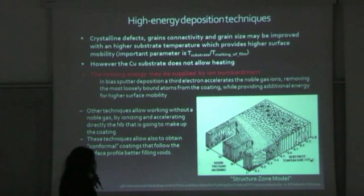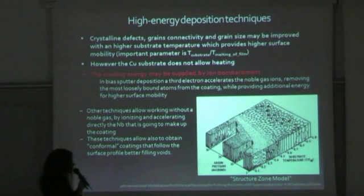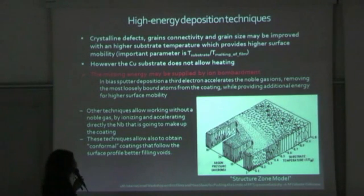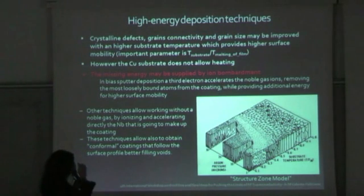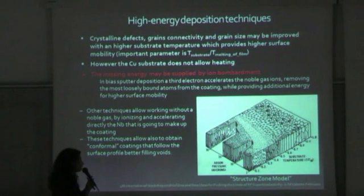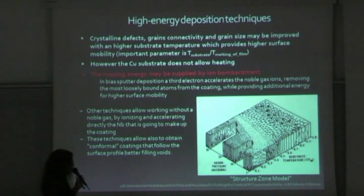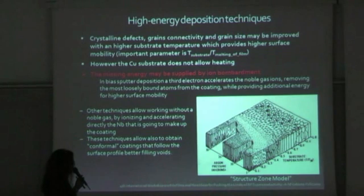As we've seen throughout this workshop, the state of the art for coatings has been afflicted by problems due to the production method being used — namely sputtering. With higher energy deposition techniques, crystalline defects and grain connectivity and grain size may be improved using higher substrate temperature. As we heard this morning from Andre's lecture, by combining temperature with incidence ion energy or kinetic energy, you're able to achieve comparable results — and this is something we have indications we can get to.